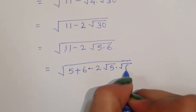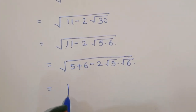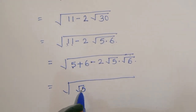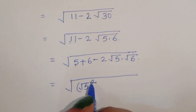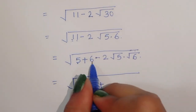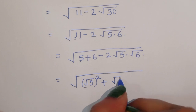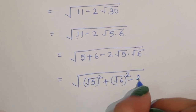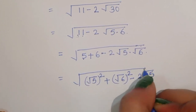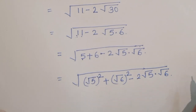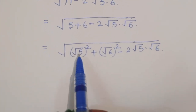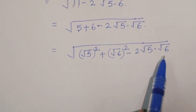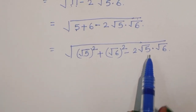Now, √5 can be written as (√5)² and √6 can be written as (√6)². So inside we have (√6)² + (√5)² - 2·√5·√6. You can see here the formula a² + b² - 2ab, which is the formula for (a - b)² — here a = √6 and b = √5.